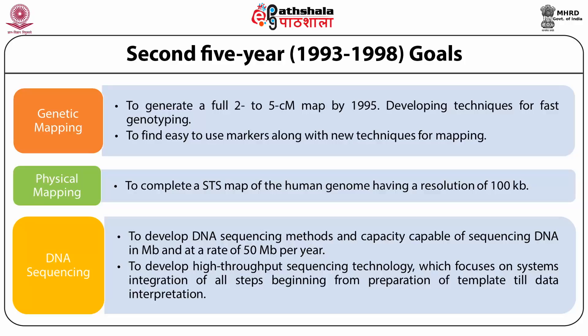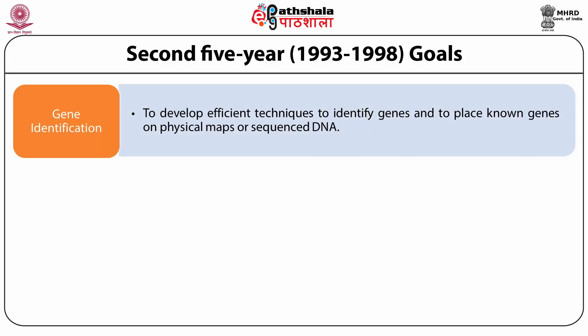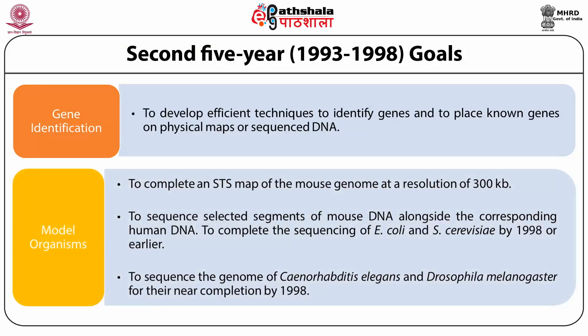It also involved development of high-throughput sequencing technology focusing on systems integration at all steps from template preparation to data interpretation. The next goal was gene identification, involving development of efficient techniques to identify genes and place them on physical maps or sequence DNA. The next goal was model organisms, to complete an STS map of the mouse genome at a resolution of 300 KB, to sequence selected segments of mouse DNA alongside corresponding human DNA, to complete sequencing of E. coli and Saccharomyces cerevisiae by 1998 or earlier, and to near-complete the sequencing of C. elegans and Drosophila melanogaster by 1998.